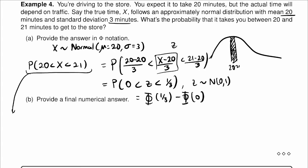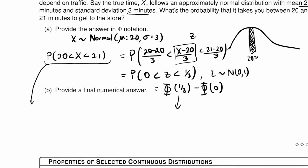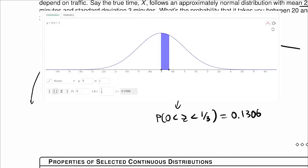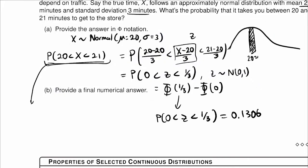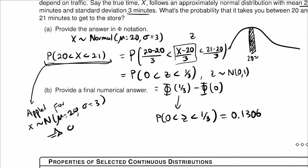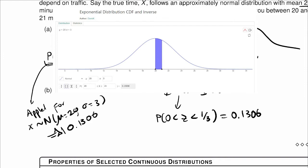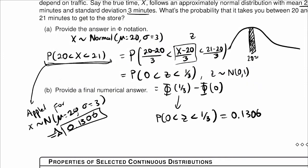Using the applet to calculate this, the probability that c is between 0 and 1/3 is 0.1306. We can also calculate it directly using the applet for x distributed normal with mu equal to 20 and sigma equal to 3, and we get the same result: 0.1306. In both cases we have the same result.